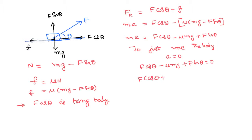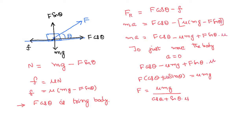Therefore F(cos theta plus mu sin theta) equals mu Mg. There was a mu missing in the earlier step — it is actually Ma equals F cos theta minus μ(Mg minus F sin theta), so there is a mu term with Mg as well as with sin theta. Simplifying, the minimum force required to move the body at constant velocity is F equals mu Mg divided by (cos theta plus mu sin theta).